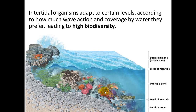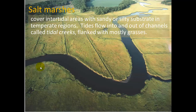High biodiversity persists even within intertidal zones, which have different levels — some areas more often underwater and others more often exposed to air. Within just a few meters you can see quite a diversity of conditions, like mussels clustering at certain levels. Salt marshes cover intertidal areas with sandy or silty substrate in temperate regions.